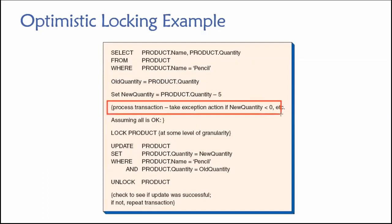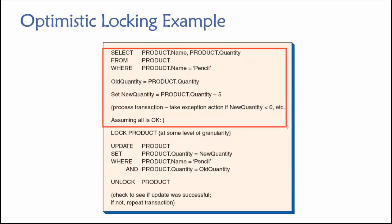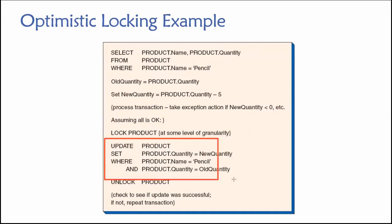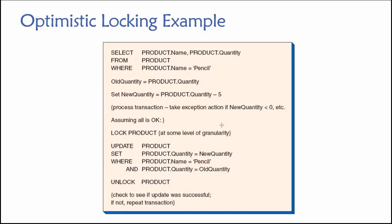We set our new quantity equal to the product quantity minus five. Then we do any other steps needed. Then we get to a point where we issue a lock — after we've already done a bunch of work. We issue the lock and try to do an update, and note that our update is based on the condition that the current product quantity equals what it was at the beginning of our transaction. If that is true, this update will succeed; if false, it will fail.